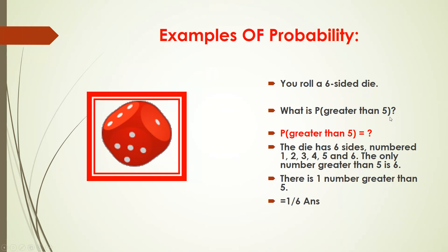The question is: what is the probability of getting a number greater than five? The die has six sides — one, two, three, four, five, six. The only number greater than five is six. So there is only one favorable outcome, and we divide by six because there are six sides. So the answer is one divided by six.